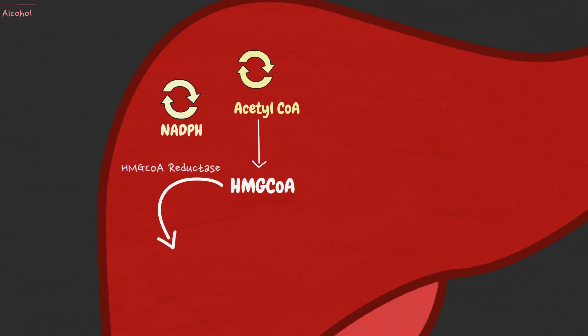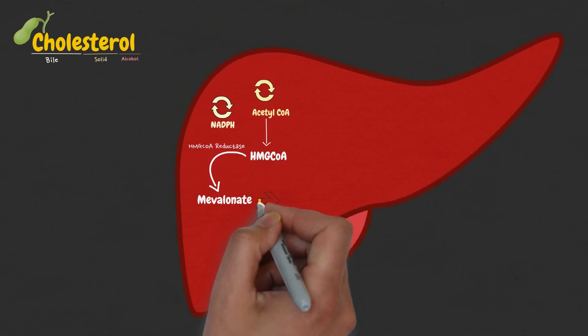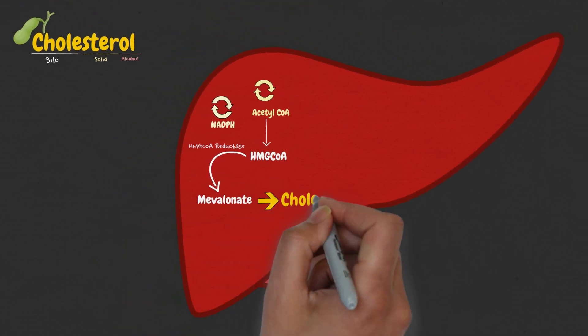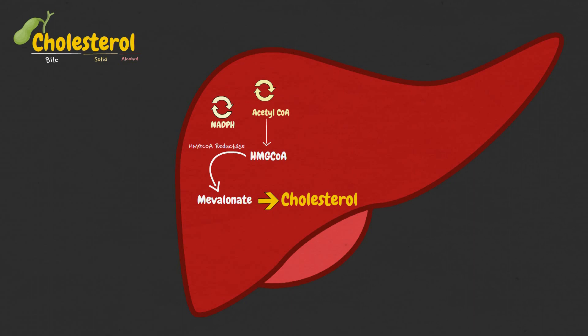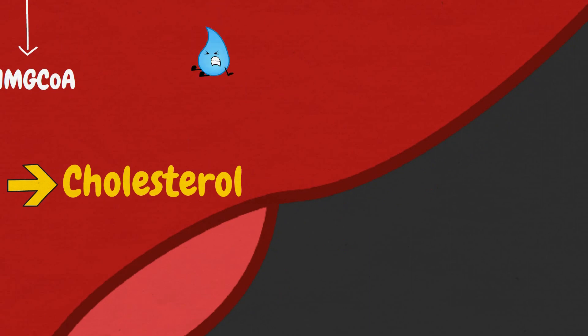This gives us mevalonate, which is then metabolized via more than two dozen intermediates to form cholesterol through the mevalonate pathway. Now, it is important to remember that cholesterol is minimally soluble in water.